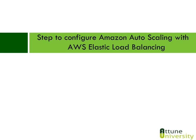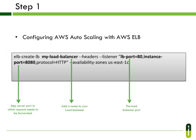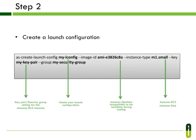Now we will see the steps to configure Amazon Autoscaling with AWS Elastic Load Balancing. Configuring AWS Autoscaling with AWS CLB Elastic Load Balancer: you need to add the load balancer name at 'my load balancer' as shown in the snapshot, and provide your load balancer port number at LB port equals 80. By default this port is set to 80, and you need to replace instance port equals 8080 with your port number to forward requests. Create a launch configuration: provide your launch configuration name, machine image, instance type or size, and key pair and group settings for the Amazon EC2 instance. Edit with your configuration and launch your instance.